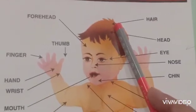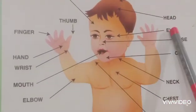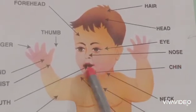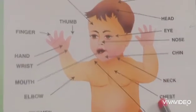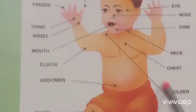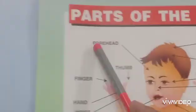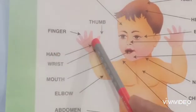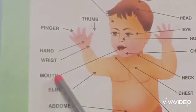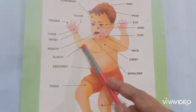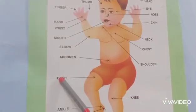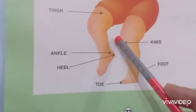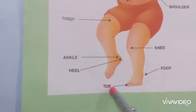Hair, Head, Eye, Nose, Chin, Neck, Chest, Shoulder, Forehead, Thumb, Finger, Hand, Wrist, Mouth, Elbow, Abdomen, Thigh, Ankle, Heel, Knee, Foot and Toe.